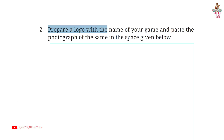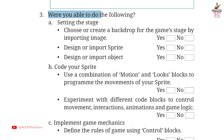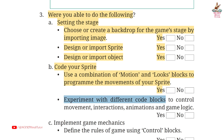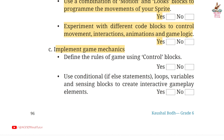Page 96. Question 2: Prepare a logo with the name of your game — you have to do this yourself. Third: Were you able to do the following? A. Setting the stage: Choose or create a backdrop for the game stage by importing image — Answer: Yes. Design or import sprite — Answer: Yes. Design or import object — Answer: Yes. B. Code your sprite: Use a combination of motion and looks blocks to program the movements of your sprite — Answer: Yes. Experiment with different code blocks to control movements, interactions, animations, and game logic — Answer: Yes. C. Implement game mechanics: Define the rules of game using control blocks — Answer: Yes. Use conditional if-else statements, loops, variables and sensing blocks to create interactive gameplay elements — Answer: Yes.